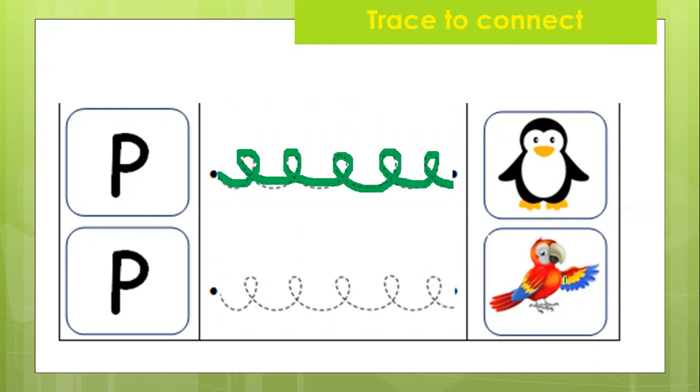And last one, P is for parrot. It's a parrot. Parrot is a beautiful bird. Yeah. So trace to connect P to parrot.